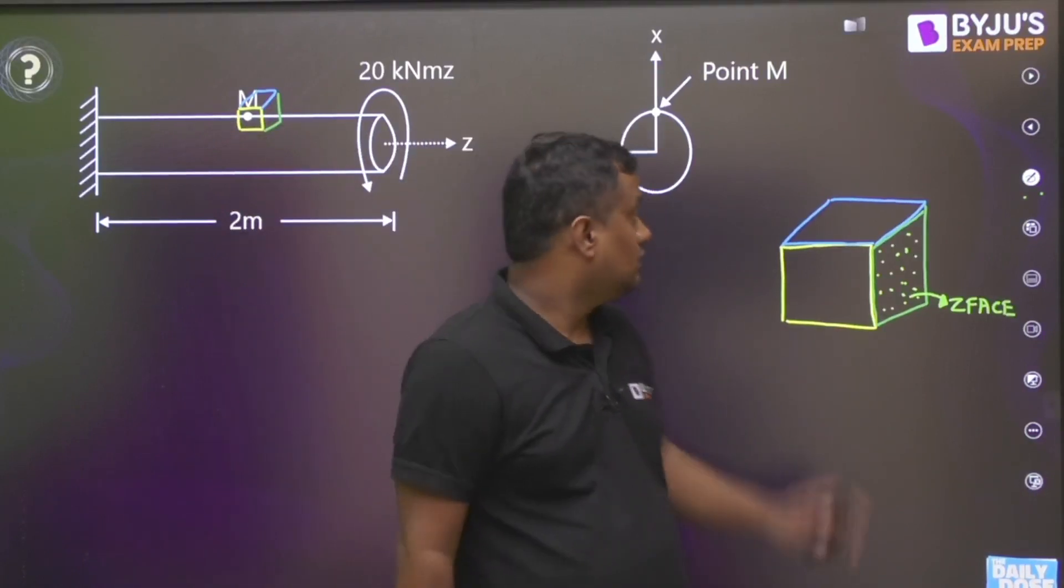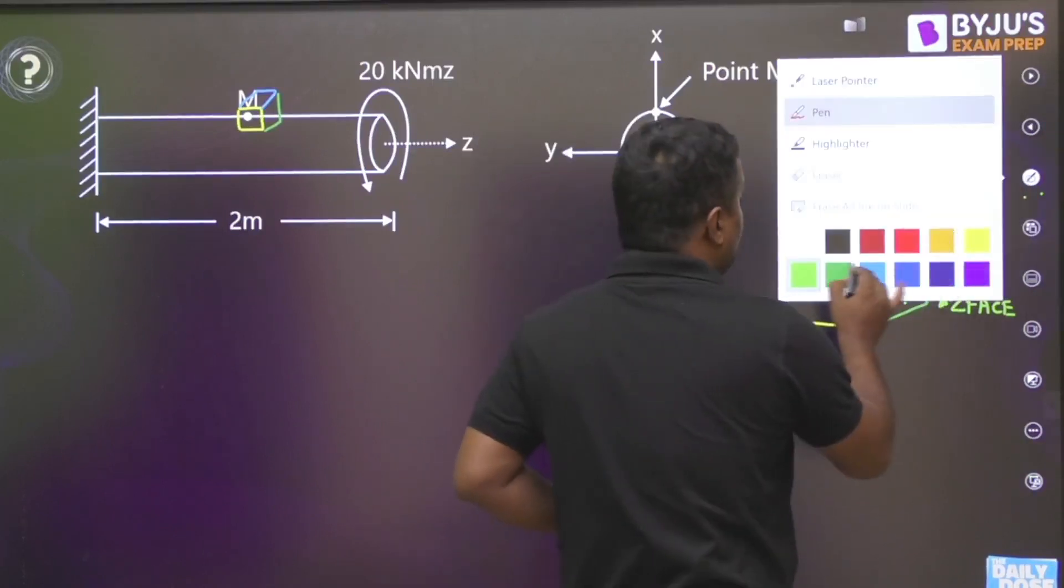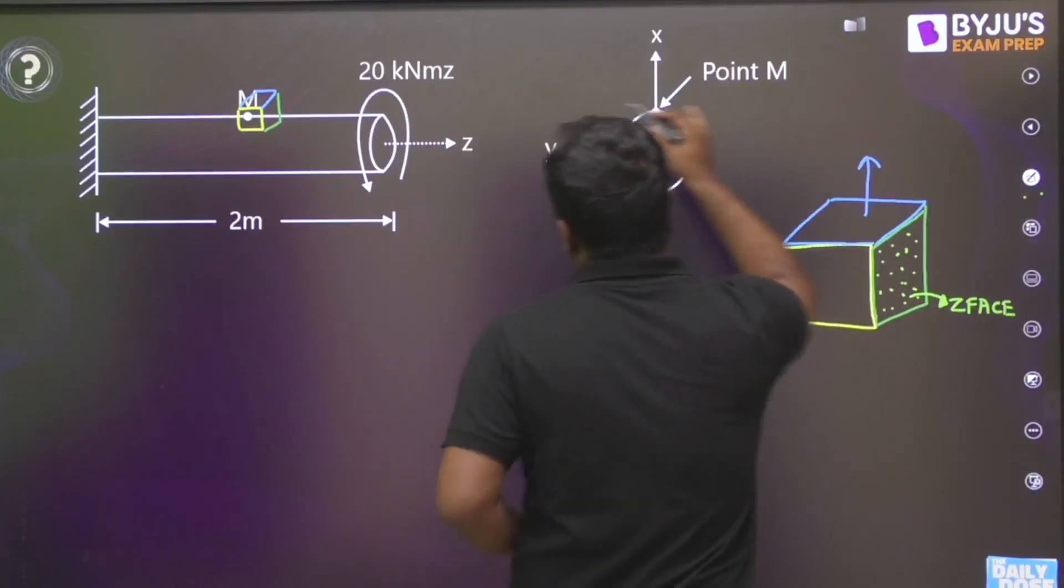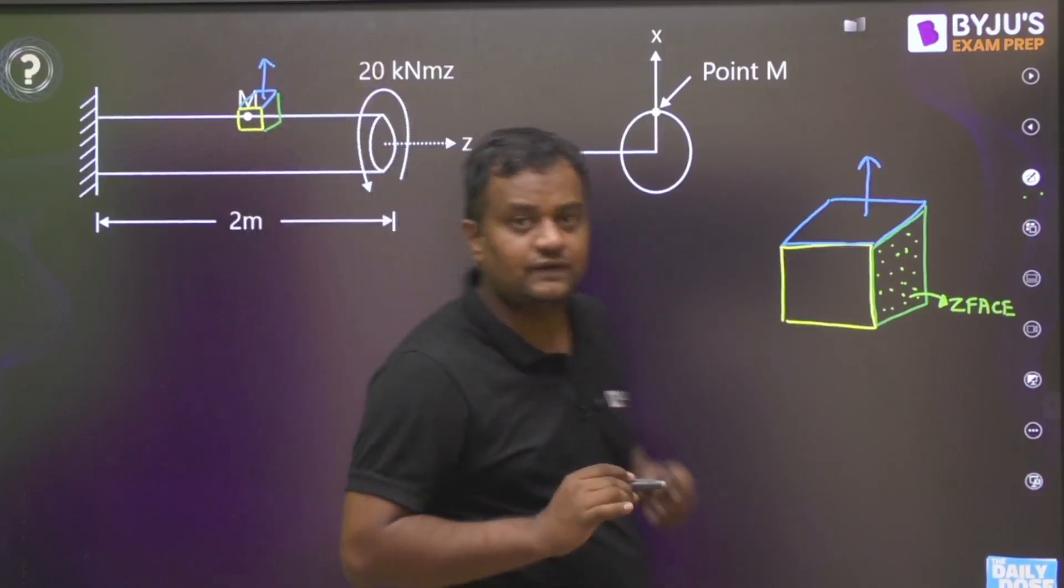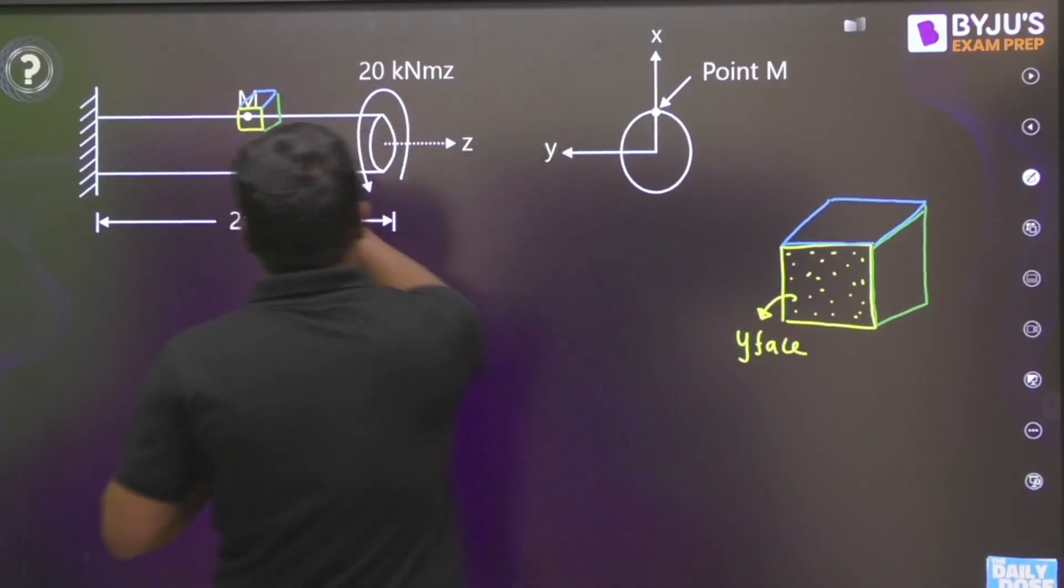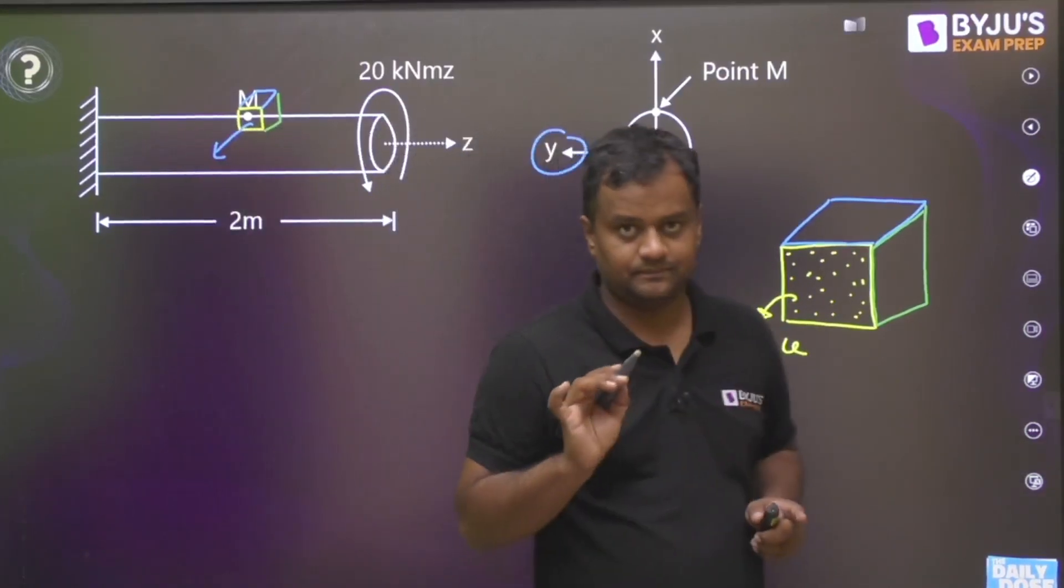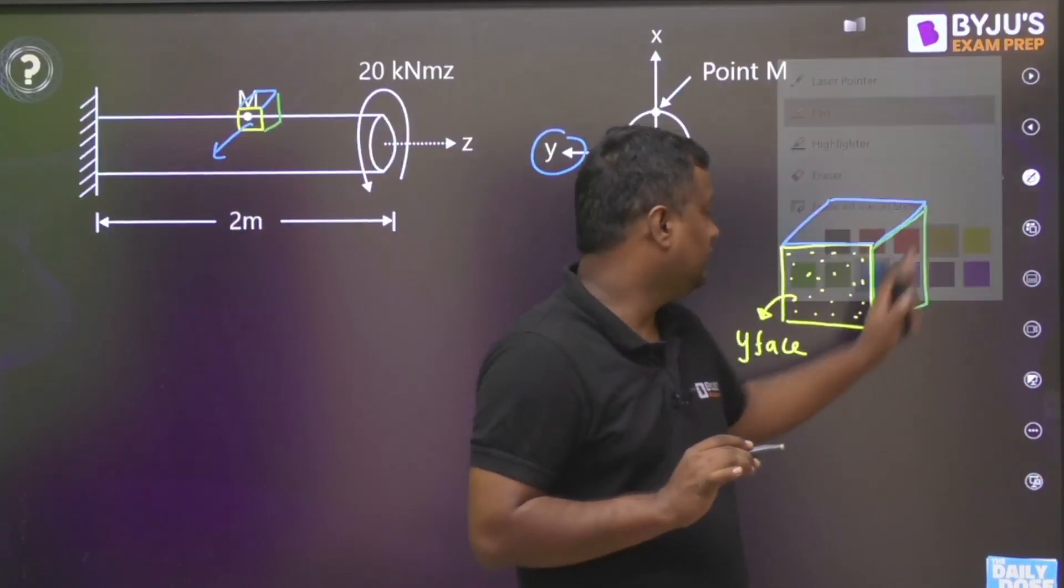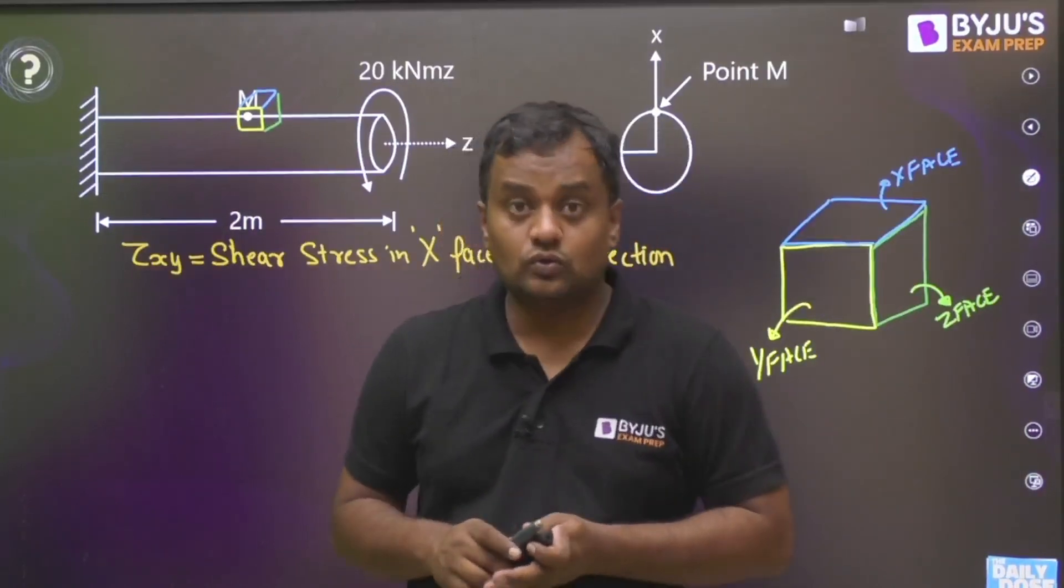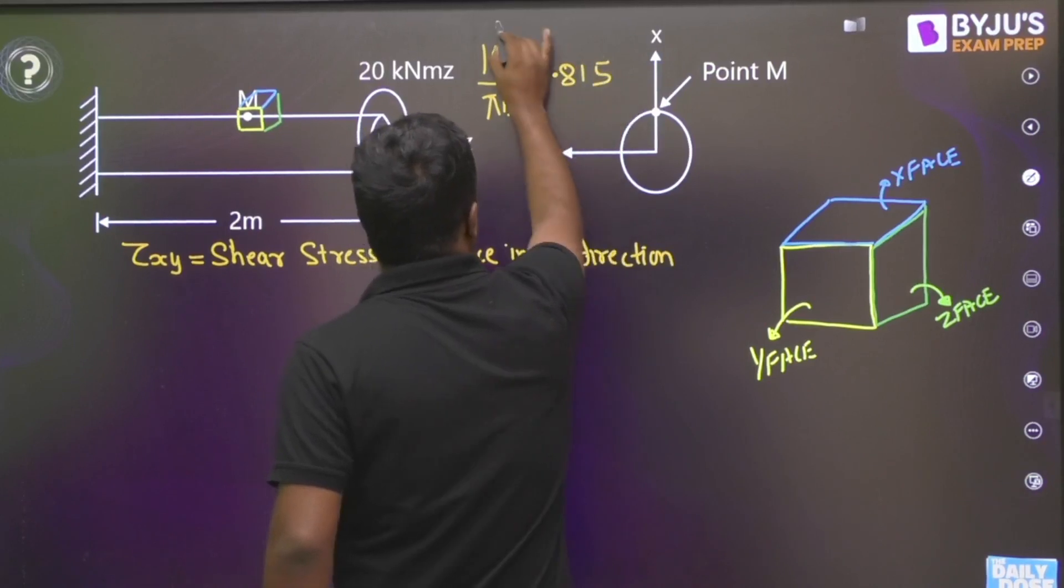Now let me tell you blue face. From blue face, the outward normal is like this, the outward normal is in X direction. This is X face. Similarly, this yellow one, from yellow one the outward normal is in Y direction, so this is the Y face. Okay, now moving further, you call it 16T/πD³. The answer is 0.815, which was given as one of the options. That is absolutely wrong. Why?